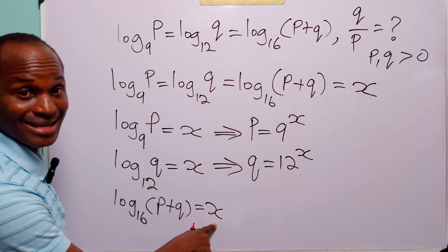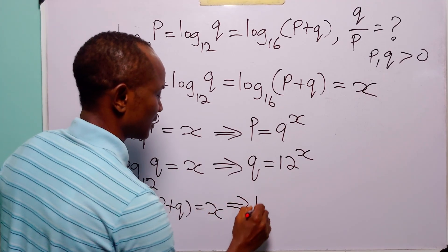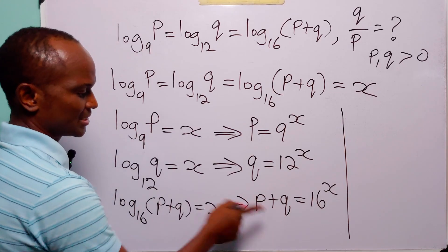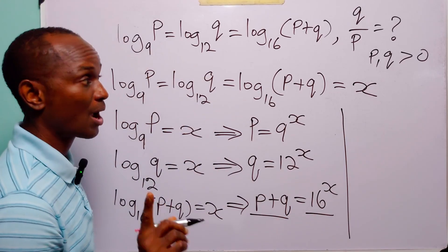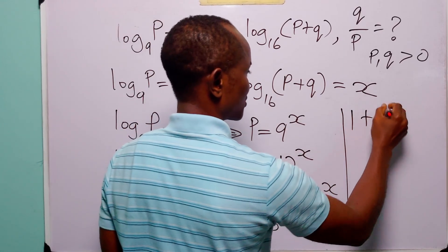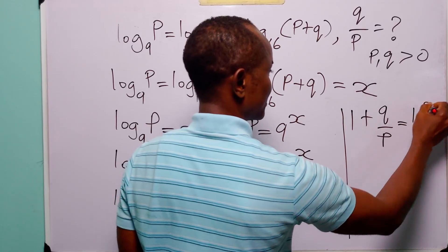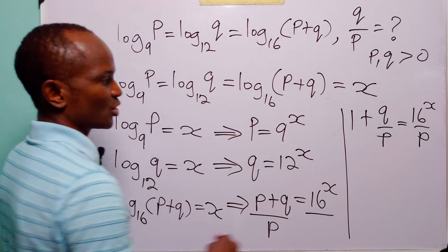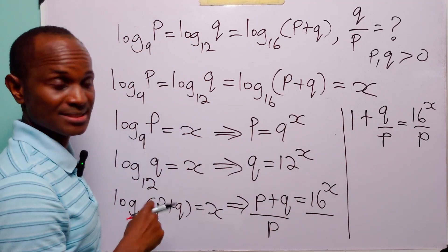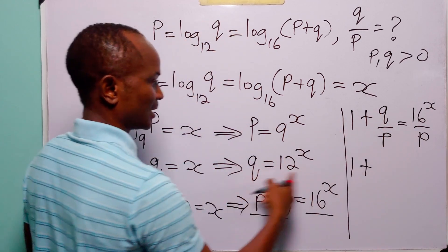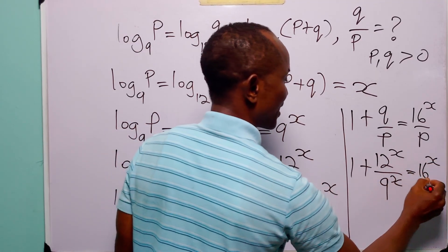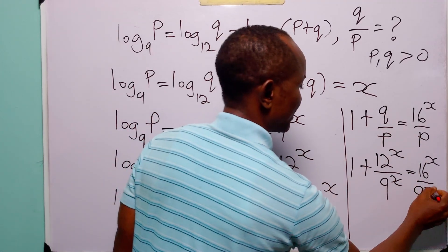And from here we have that 16 to the power X is equal to P plus Q. Now, if we divide both sides of equation 1 by P, we are going to have that P divided by P is 1, plus Q over P, is equal to 16 to the power X divided by P. We know that P is equal to 9 to the power X and Q is equal to 12 to the power X, so we have 1 plus 12 to the power X divided by 9 to the power X is equal to 16 to the power X divided by 9 to the power X.